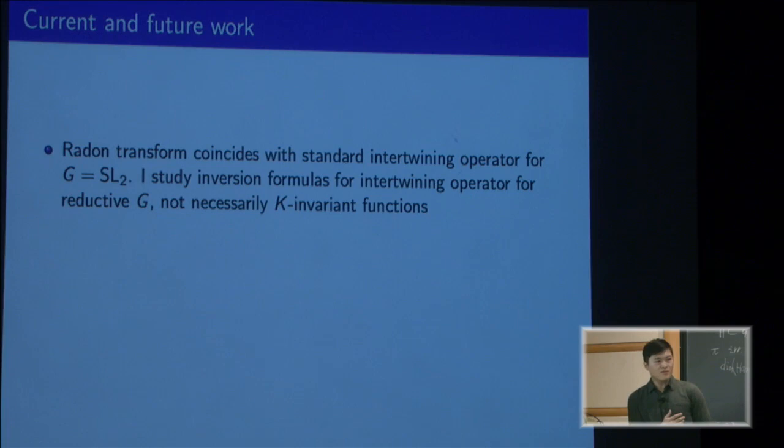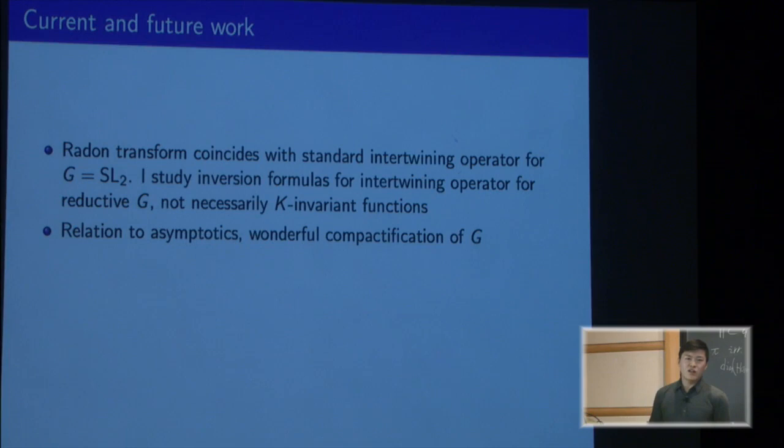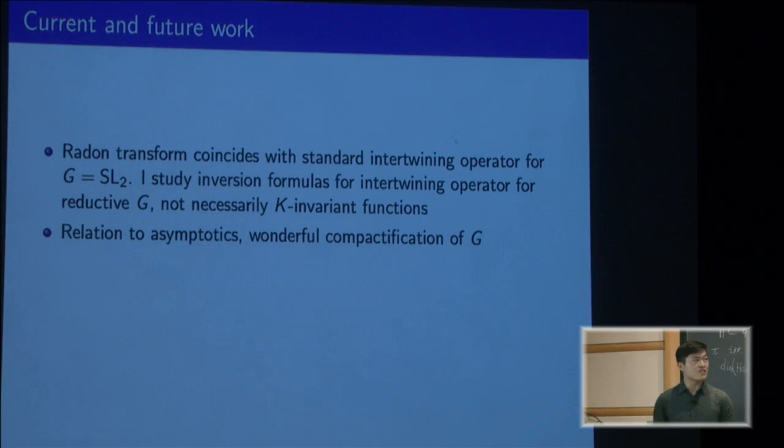In the c-function, we see that we have this ratio of gamma functions in the real case. Even when it's not K-invariant, we still get some product of ratios of gamma functions. There's no conceptual explanation for why that's happening at the moment. Over a non-archimedean local field, this inversion of intertwining operators actually relates to asymptotics of functions on G and also to this geometry of the wonderful compactification of G. It's expected that even over the reals, there should be some kind of explanation like this.